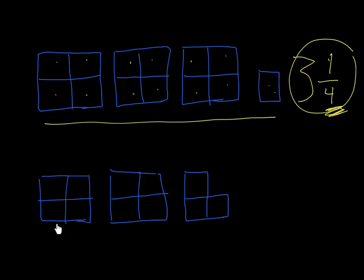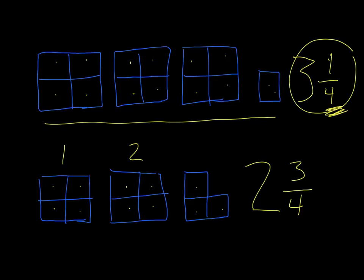Looking at the next one: we've got 1, 2 complete boxes, and then a partial set of 3 boxes. Each complete box has 1, 2, 3, 4 pieces, so our denominator is 4. Counting the complete boxes — we have 1 and 2 — so our whole number is 2. The numerator is going to be these 3 boxes in the partial set, giving us 2 and 3 quarters. Again, that can't be reduced or simplified.